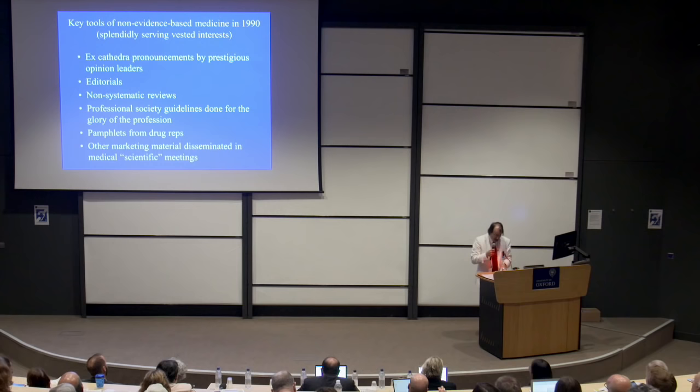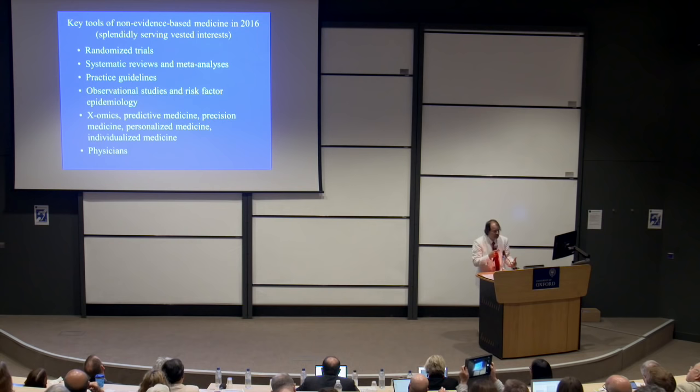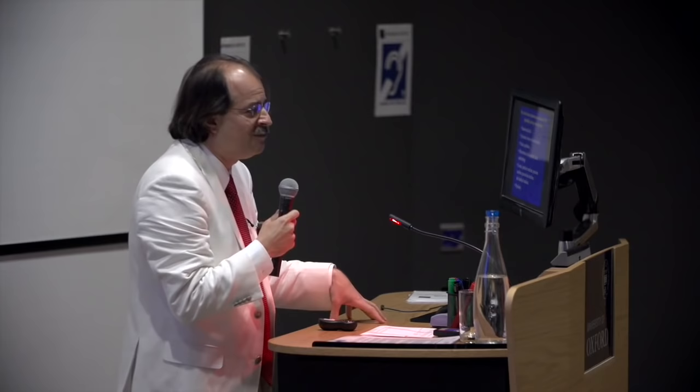And there were other types of marketing materials floating around, disseminated in scientific meetings. Now, we have changed that clearly. What we have now in 2016 — the key tools of evidence-based medicine, but which are nevertheless still splendidly serving vested interests — are randomized trials, systematic reviews, and guidelines. And then there's the whole flurry of observational studies, risk factor epidemiology, and all sorts of the four P's: predictive medicine, precision medicine, personalized medicine, exomics, and lots of other initiatives — whose clinical utility, if you were to ask, is very, very little.